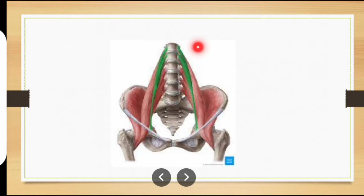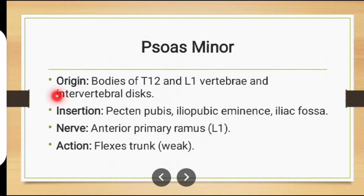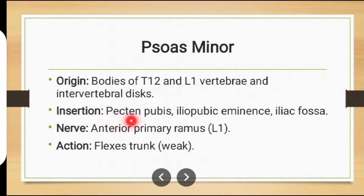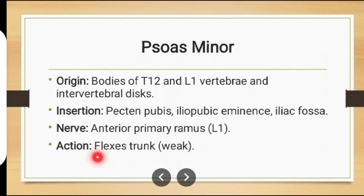The next muscle is psoas minor muscle. The muscle in green is psoas minor muscle. Origin: bodies of T12 and L1 vertebrae and intervertebral discs. Insertion: pecten pubis, iliopubic eminence, iliac fossa. Nerve supply: anterior primary ramus. Action: trunk flexion.